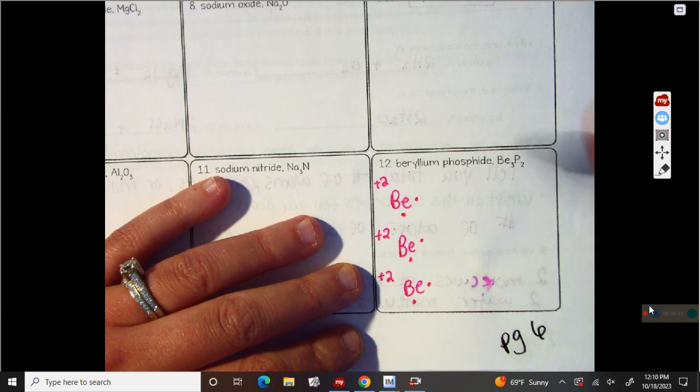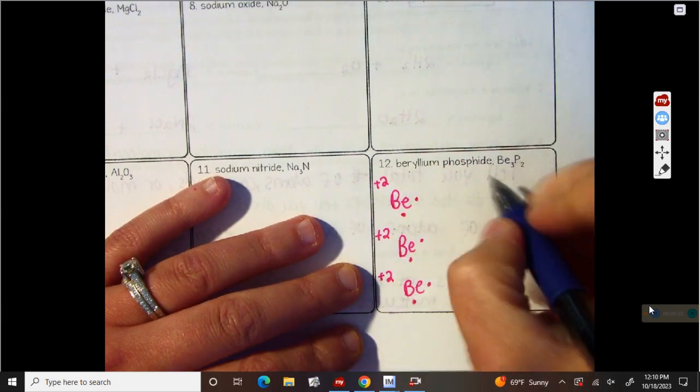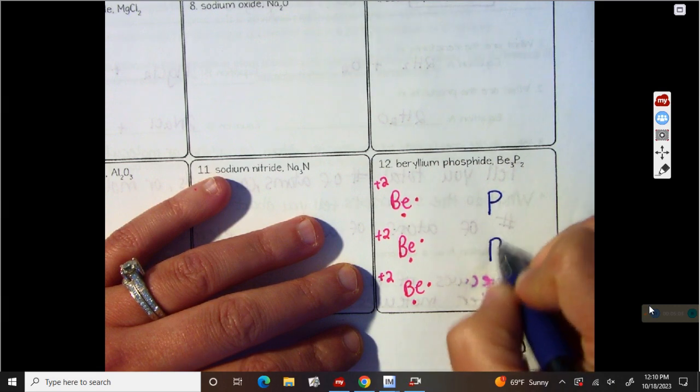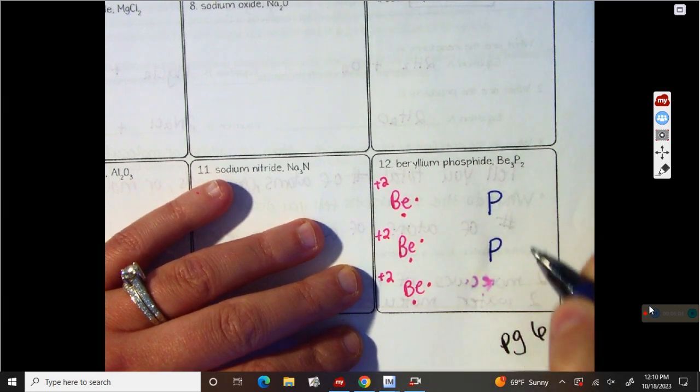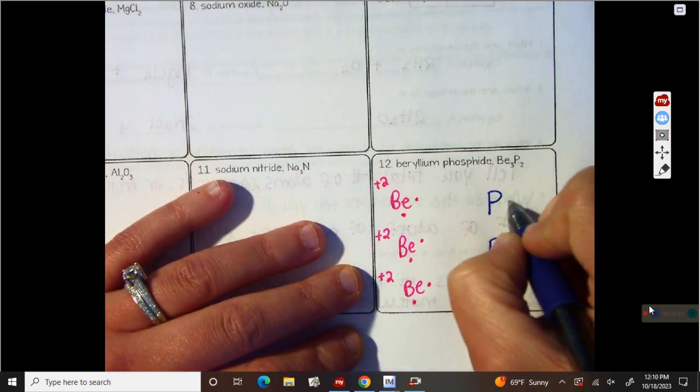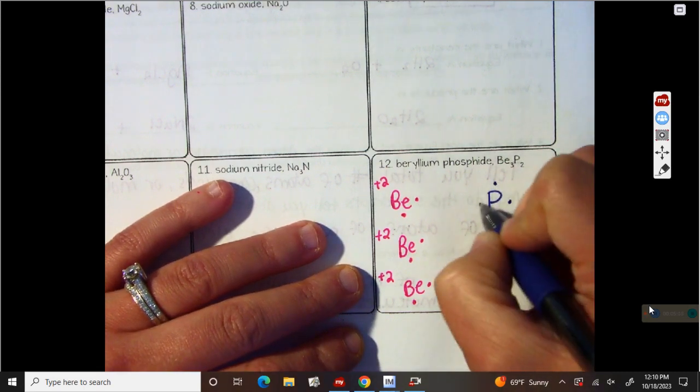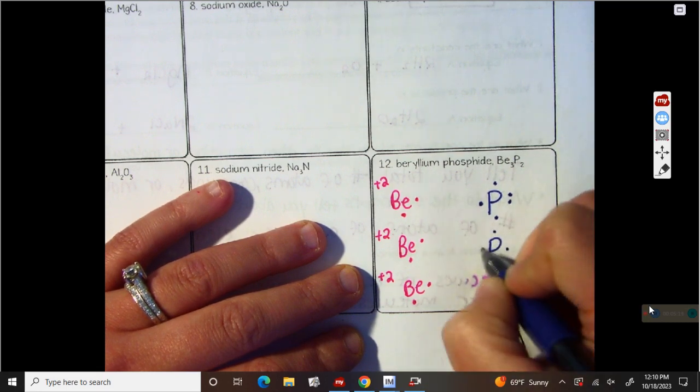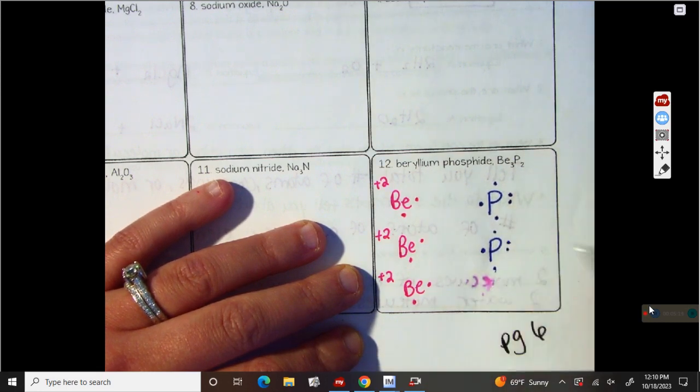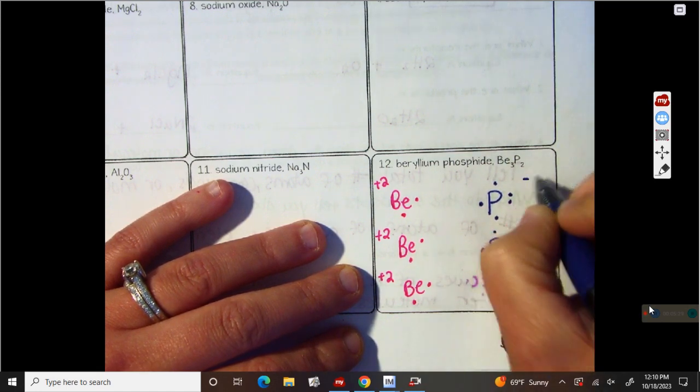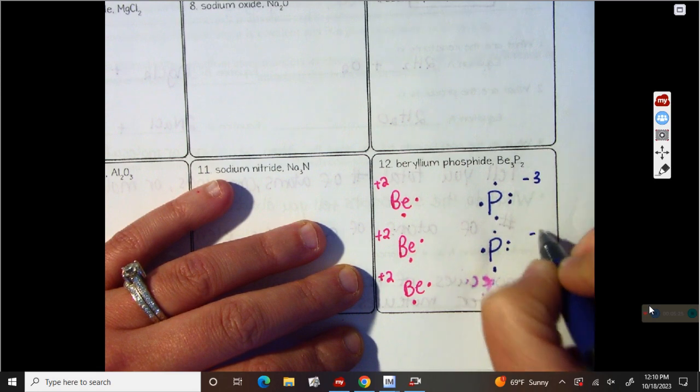Phosphorus, my non-metal, I know there's going to be two of them. And I know that phosphorus is in group 15. So it's going to have five valence electrons. One, two, three, four, five. And one, two, three, four, five. And be sure that you also put the charge negative three, negative three.